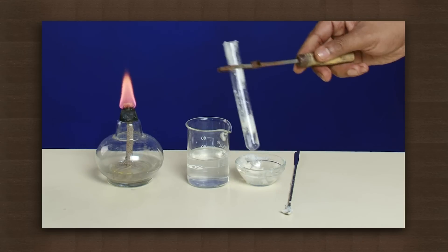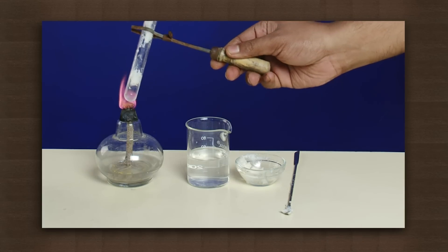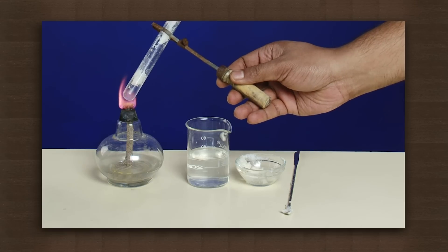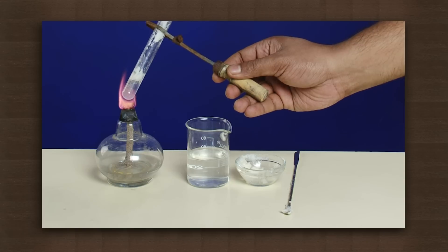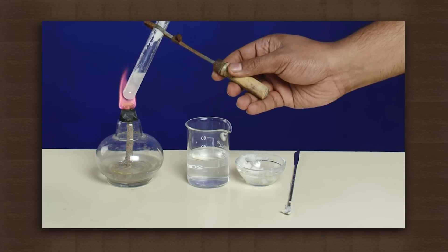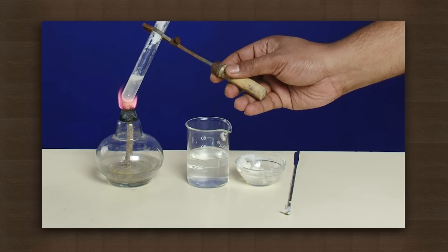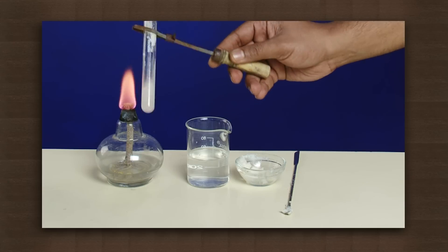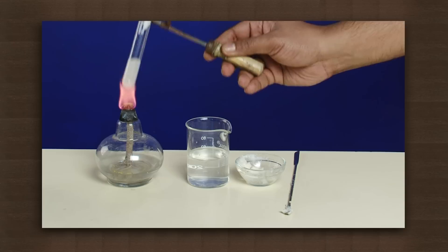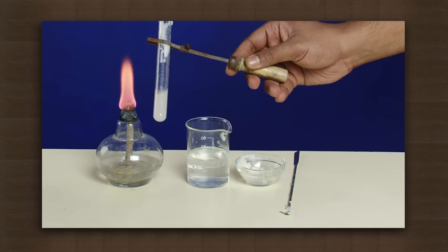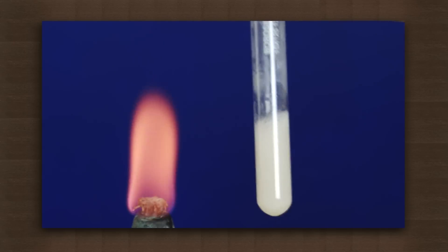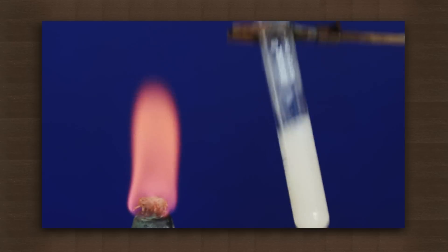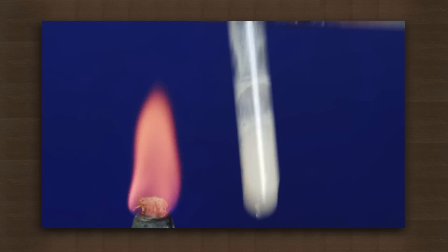Hold the test tube with the holder and heat the solution. The vanaspati readily dissolves in sodium hydroxide. This indicates formation of a soap.